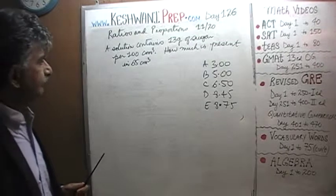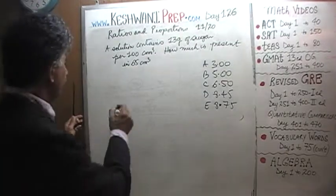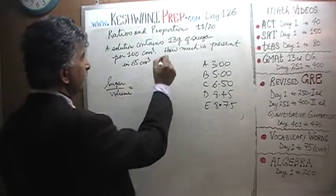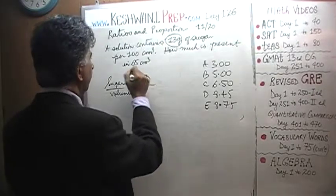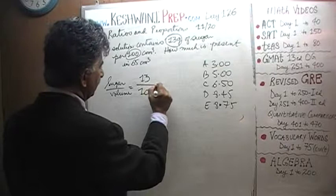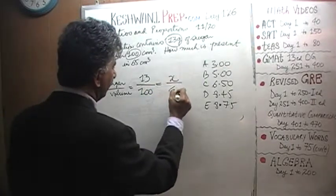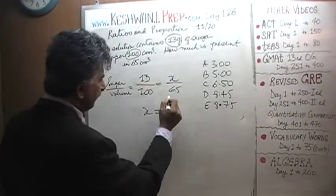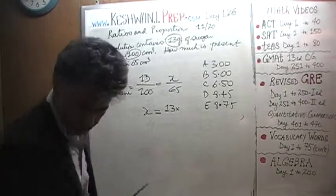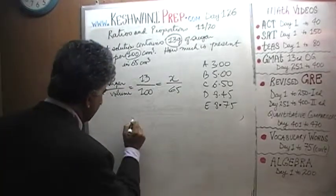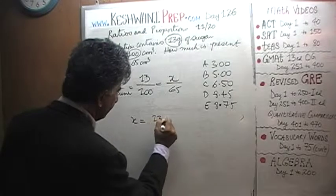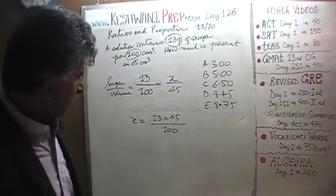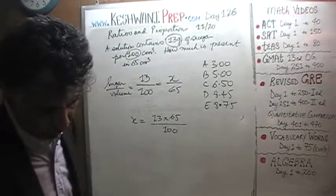Alright. What can we do here? Let's set it up as a proportion problem. So we have sugar and the volume. We know we have 13 grams of sugar in 100 cubic centimeters of volume. The question is how much sugar in 65? That's all. Cross multiply. We get x is equal to 13 times 65 over 100.